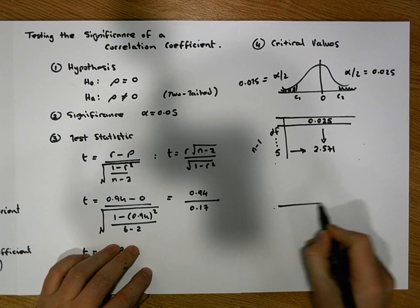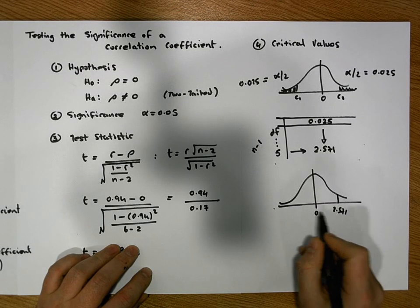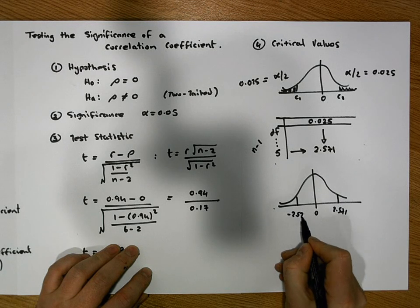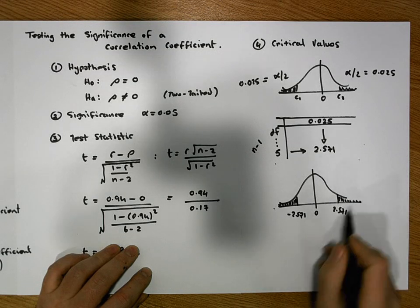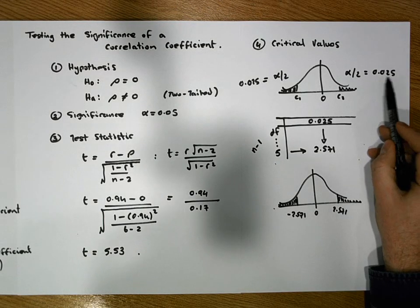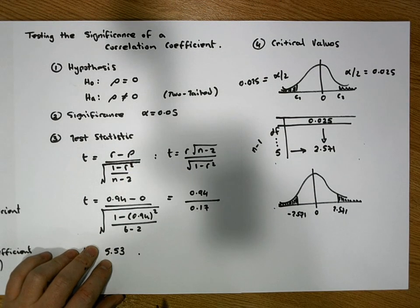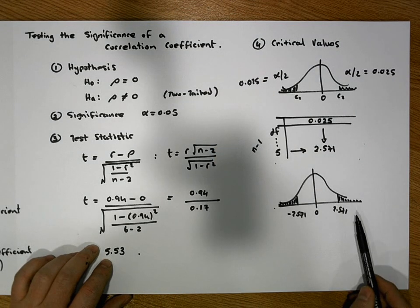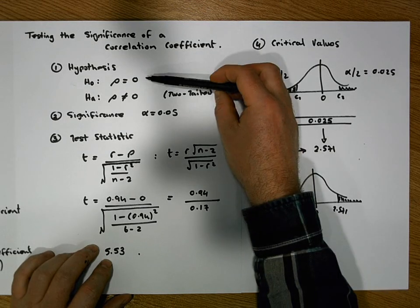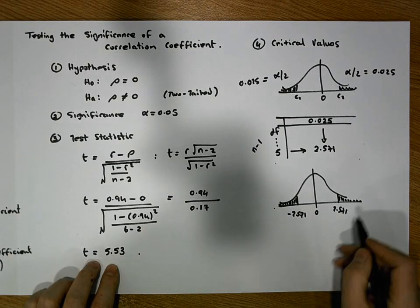So the critical value is 2.571 on the right and minus 2.571 on the left. Anything that falls into a tail area has a probability of at most 0.025 if the null hypothesis is true — in other words, a very small probability of occurring if H0 is true, and a very high probability of occurring if the null hypothesis is incorrect and the alternative is true.